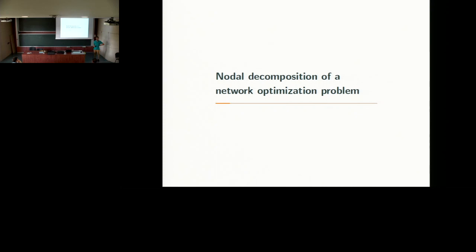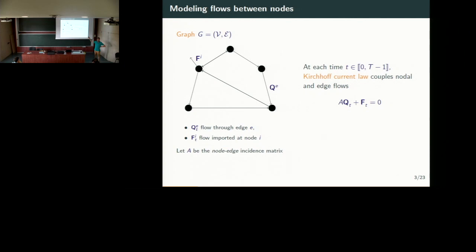Let's first talk about the model we will use. We will consider a network that is oriented and connected. We consider flows through the edges arriving at each node. The flow at the nodes and the flow at the edges are connected via the Kirchhoff current law, which means that if we consider the node-edge incidence matrix A, they are related by IQ plus F equal to zero, for all time T we consider.